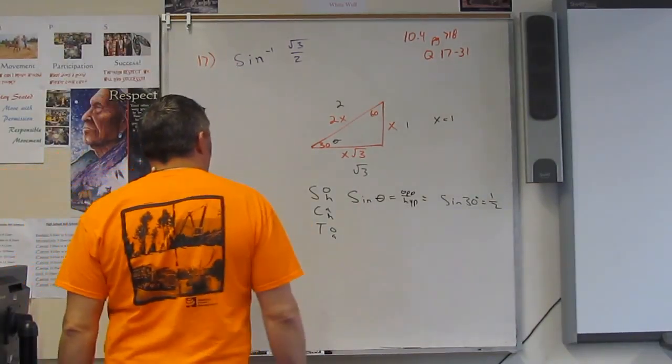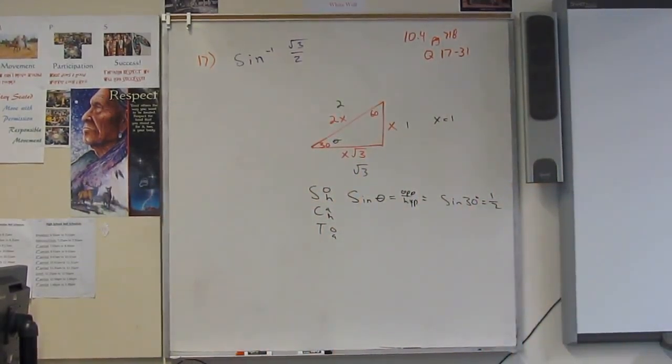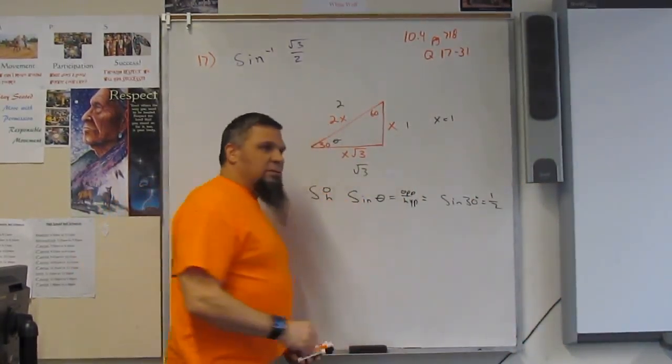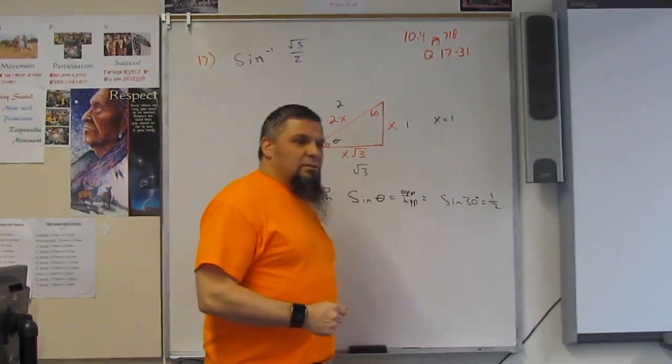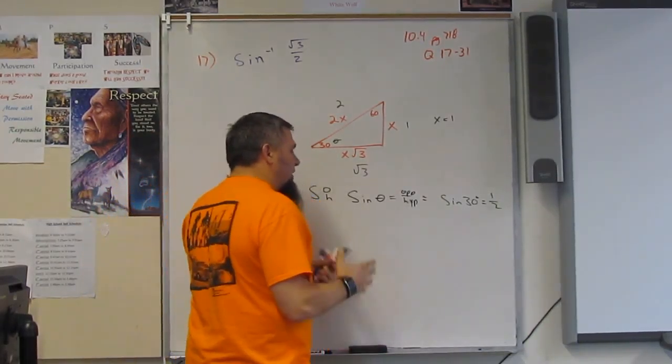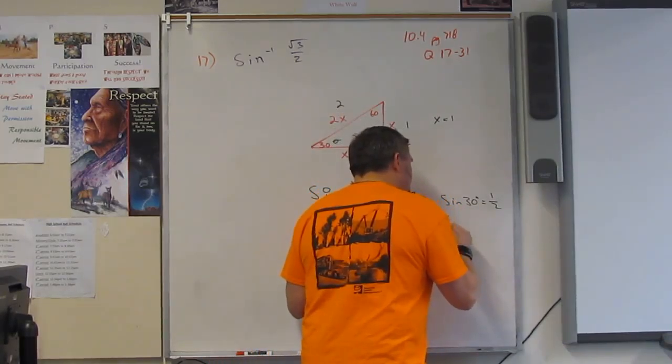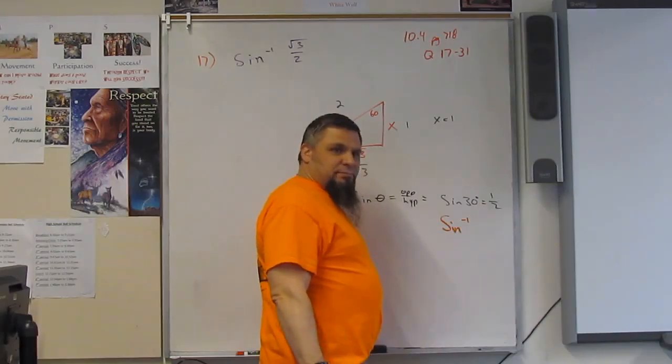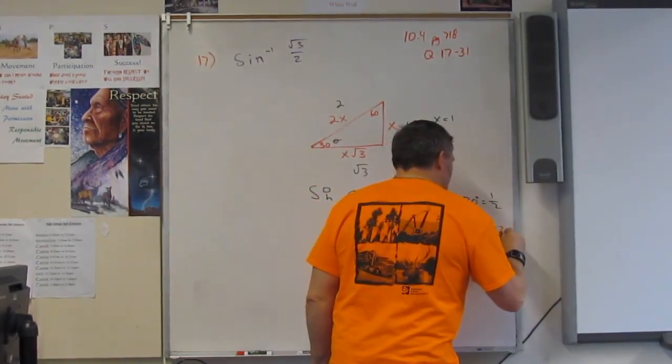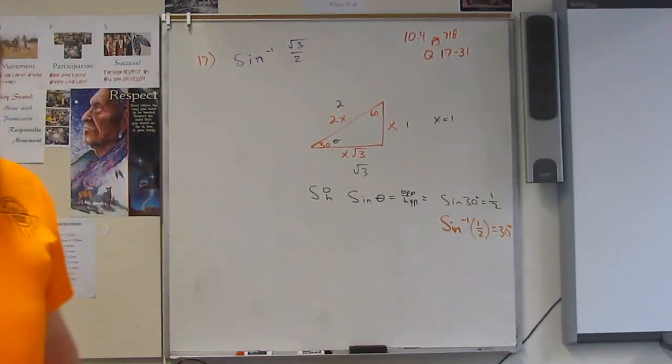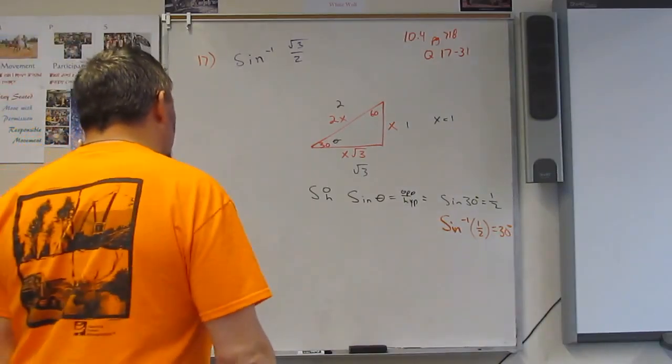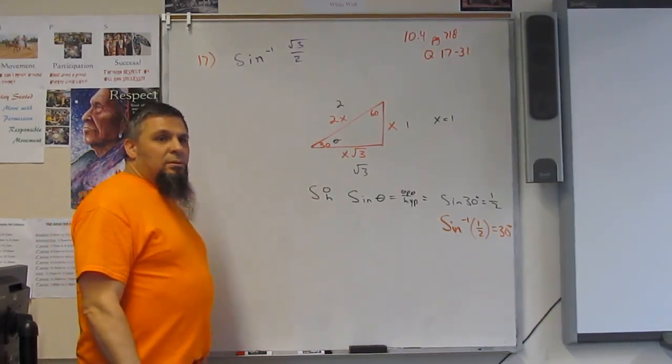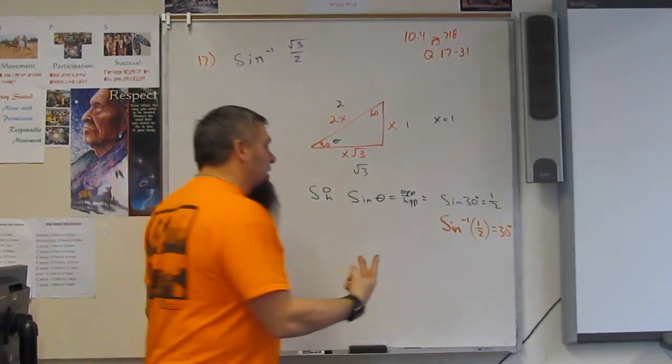All right, so what I'm going to do is teach you about the inverse sine, the inverse cosine. 30 degrees. The inverse sine is really simple. Sine inverse of one half is equal to 30 degrees. So easy. All I'm doing is I'm taking these two things and I'm reversing them, I'm inversing them.